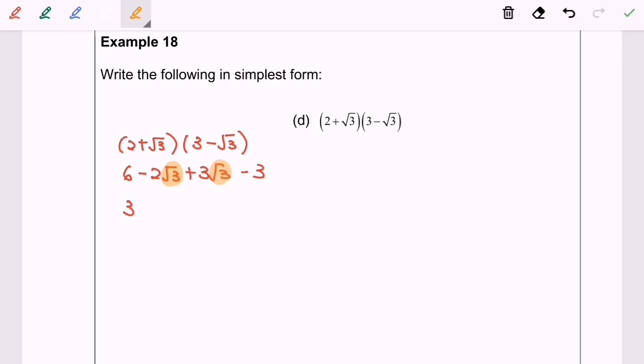So negative 2√5 plus 3√5. Assume that √5 is a term. So negative 2 plus 3 we will have positive √5.